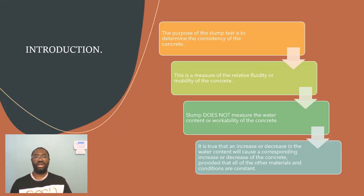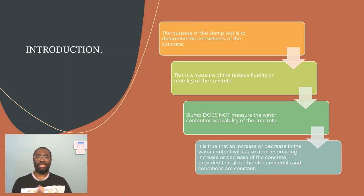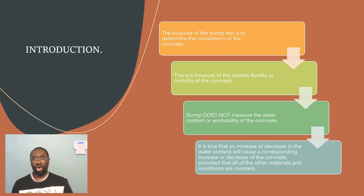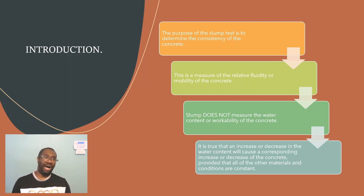The purpose of the slump test is to determine the consistency of the concrete. The consistency of the concrete is the measure of the relative fluidity or mobility of the concrete — in other words, how the concrete flows and how mobile the concrete is.